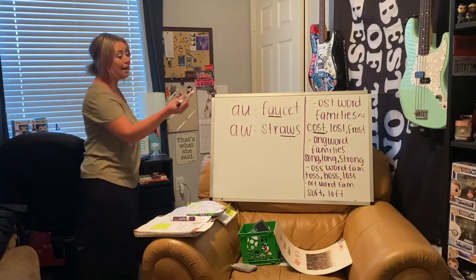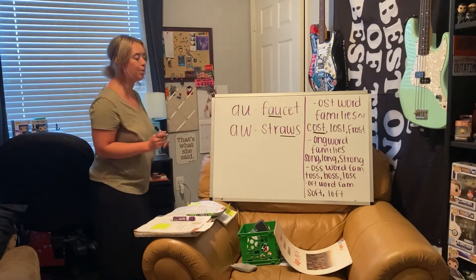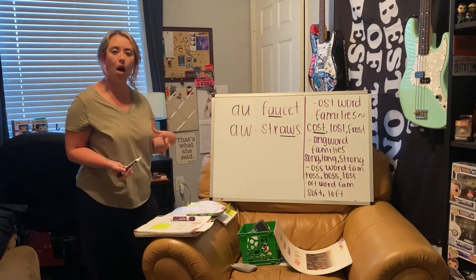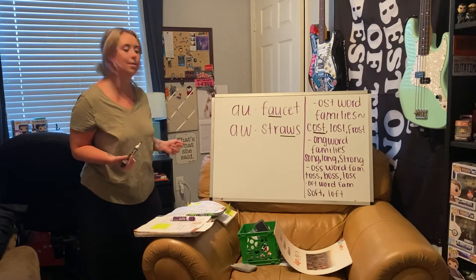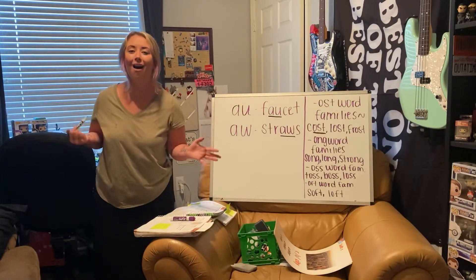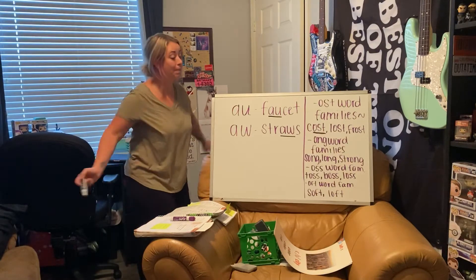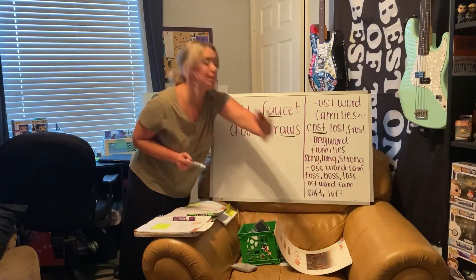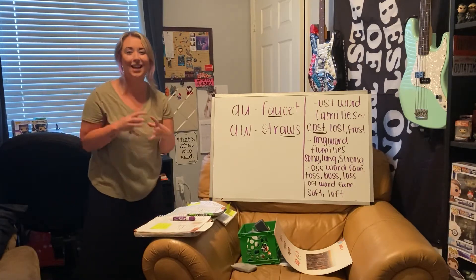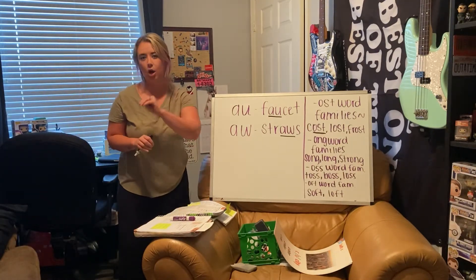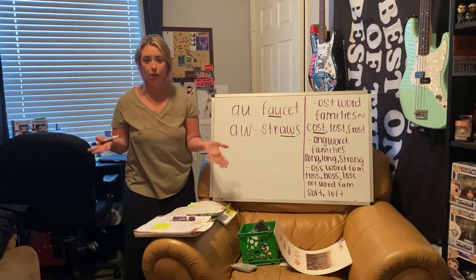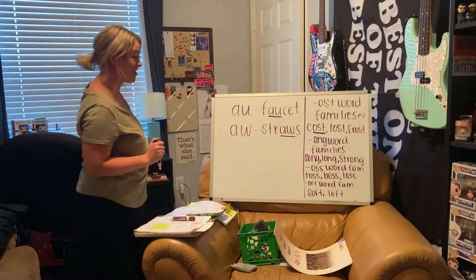We also hear the AU/AW sound in our ONG word family. For example: song, long, and strong. You hear the AW sound in those — repeat them after me: song, long, and strong. Pay special attention to the word 'strong' — you have three letters squished together to give you that blend sound. STR says 'str,' so we have STR plus ONG equals strong. If you said strong, you are correct.